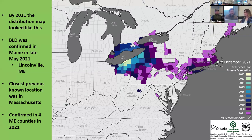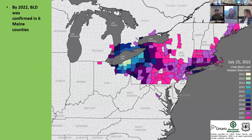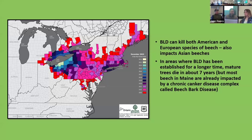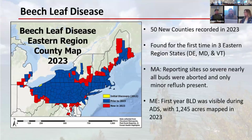We were quickly able to confirm the disease in four counties by 2022, then six counties in Maine. As of the end of 2023, we've found it in 11 Maine counties. This data is from a Northeast forest health update by the US Forest Service — the red counties on the map are new counties reported from 2022 to 2023. Northeastern states provide this data to the region for making maps like this.